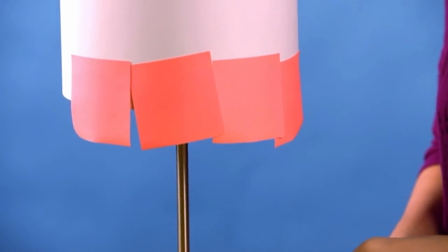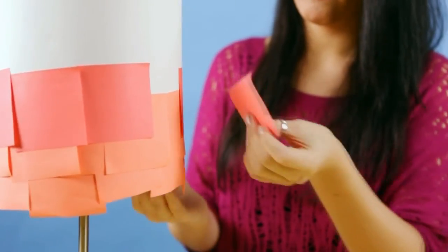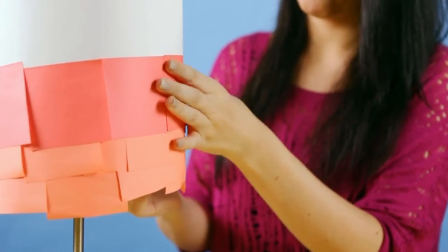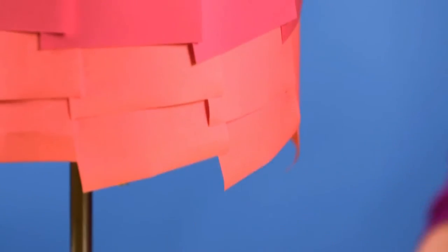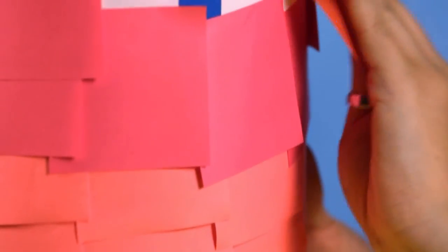Continue adding rows of post-its, layering each new row about half an inch over the previous one. You can create a stripe pattern or try creating an ombre pattern like the one I'm creating here by using gradually darker paper colors.